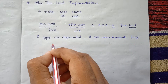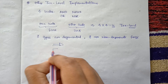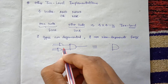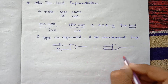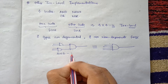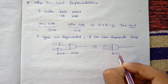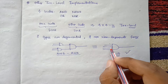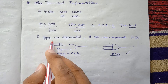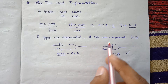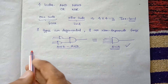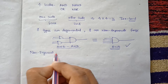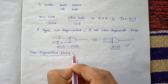For example, if we use an AND gate in the first level and again an AND gate in the second level, we can AND all the inputs in a single AND gate. So this AND-AND two-level implementation degenerates into an AND gate itself. It becomes only a one-level implementation with four inputs. In this way, eight types are degenerated and eight others are non-degenerated forms.